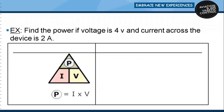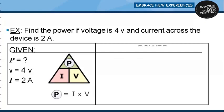Using the power triangle, we will solve a problem to clarify concepts. Find the power if voltage is 4 Volts and current across the device is 2 Amperes. We need to find P, which is on the upper side of the triangle. Power equals I times V, so power equals 4 times 2, which gives 8 Watts.